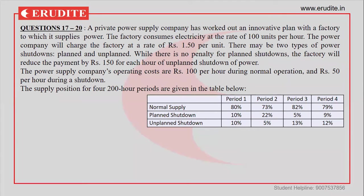Let us try to understand a problem. A private power supply company has worked out an innovative plan with a factory to which it supplies power. The factory consumes electricity at the rate of 100 units per hour, and the power company will charge the factory at the rate of ₹1.5 per unit — so 100 units per hour means ₹150 per hour.